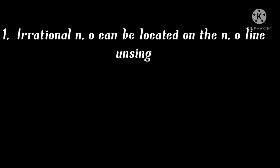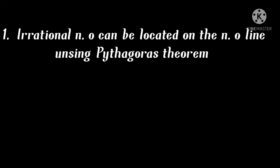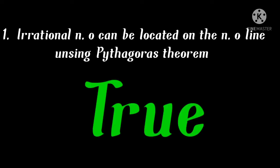Here are a few questions from what we just studied. Question 1 (True/False): Irrational numbers can be located on the number line using Pythagoras' theorem. You can give your answer in the comment section below. The answer is True, as I just showed you — the construction uses Pythagoras' theorem.